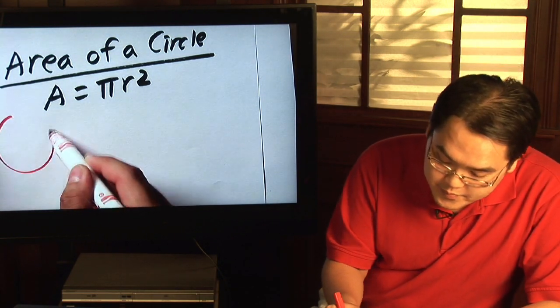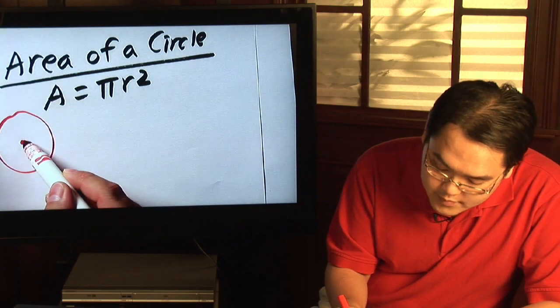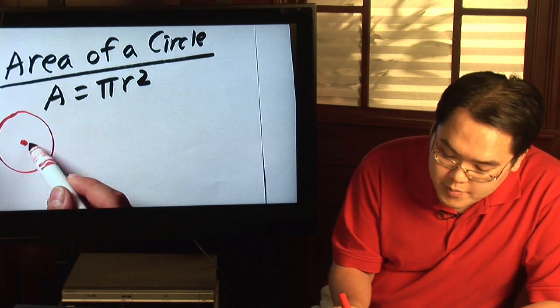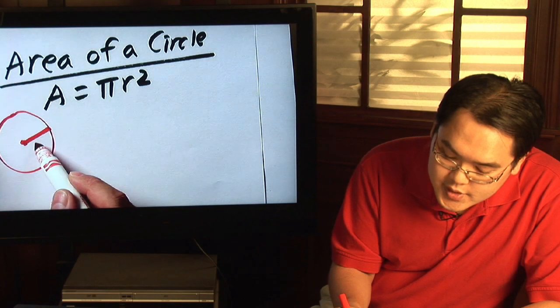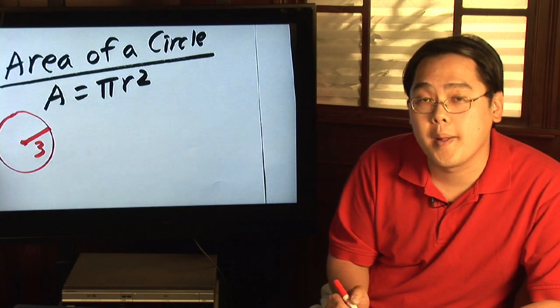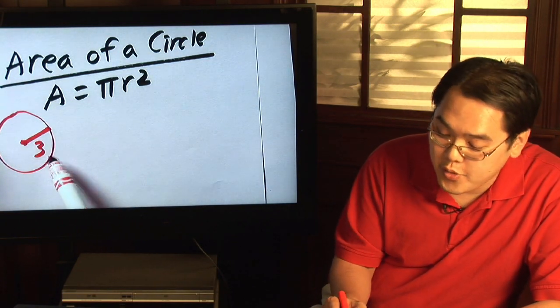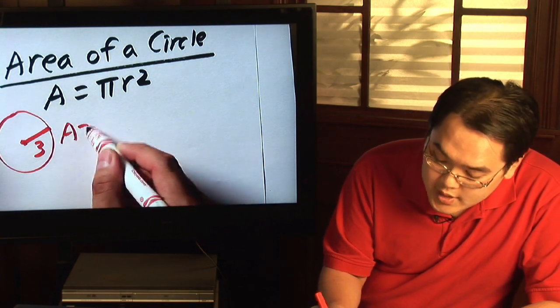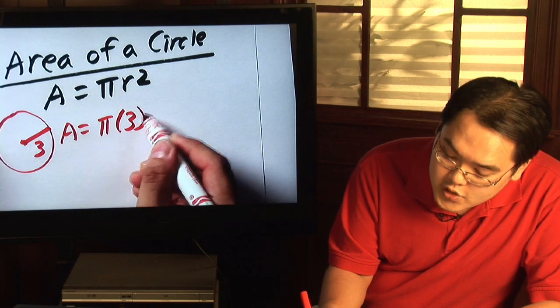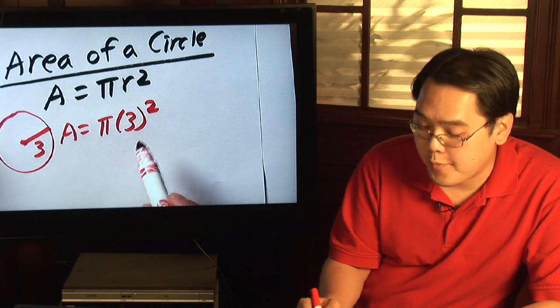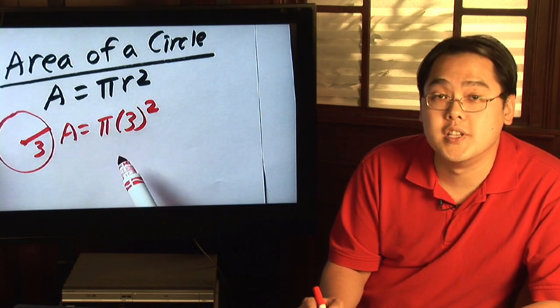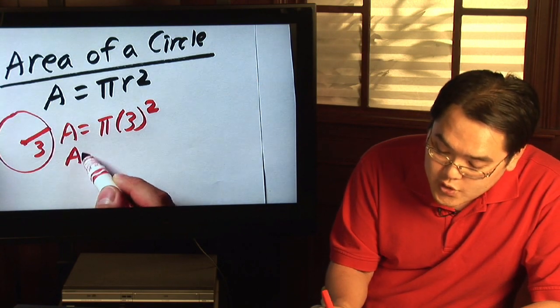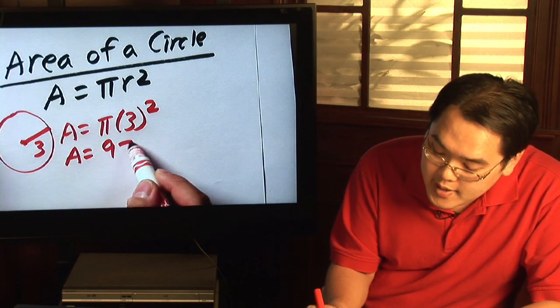So here's an example. Suppose you're given a circle and you're given that the radius is 3, and you want to find the area. All you need to do is plug in the 3 where the R is. So you have A equals pi times 3 squared. Now, 3 squared is 9, so your exact answer is going to be 9 pi.